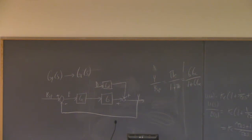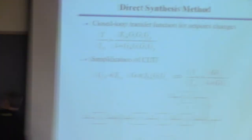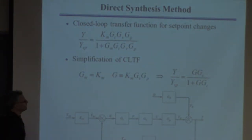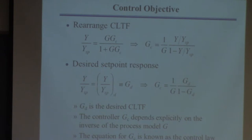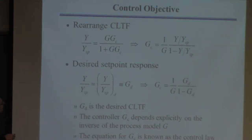The idea is we're going to deal with the closed-loop transfer function looking like GGc over one plus GGc, consistent with a block diagram where the valve, sensor, and process are lumped together. Now I'm going to take this equation and solve it algebraically for Gc. If you do that, you get an expression for Gc in terms of the closed-loop transfer function and G.